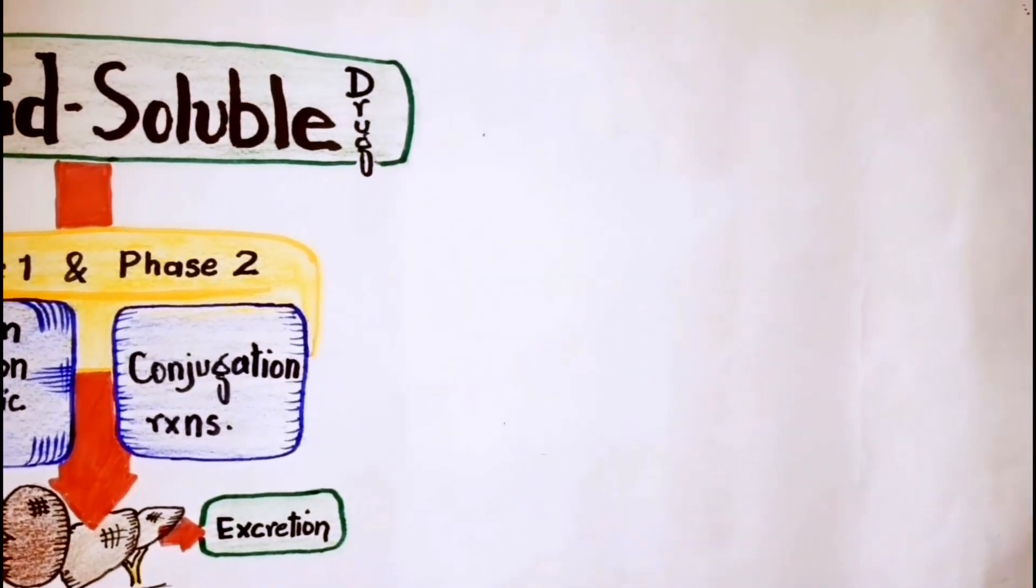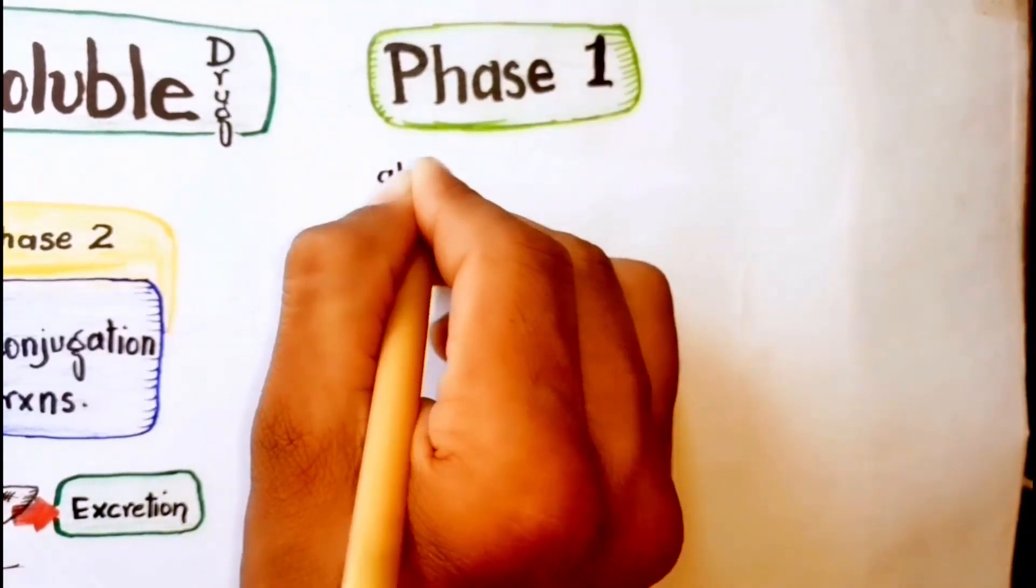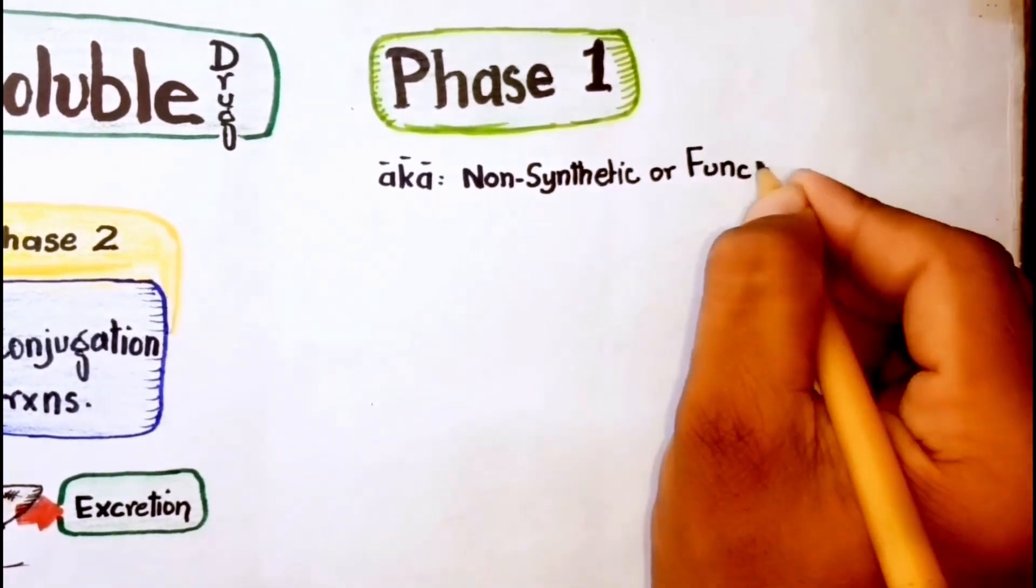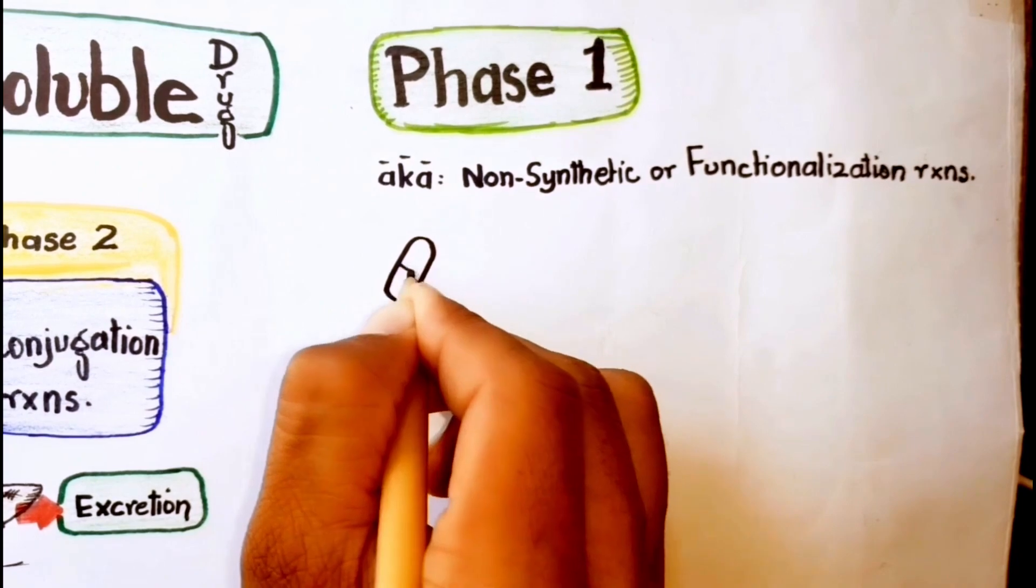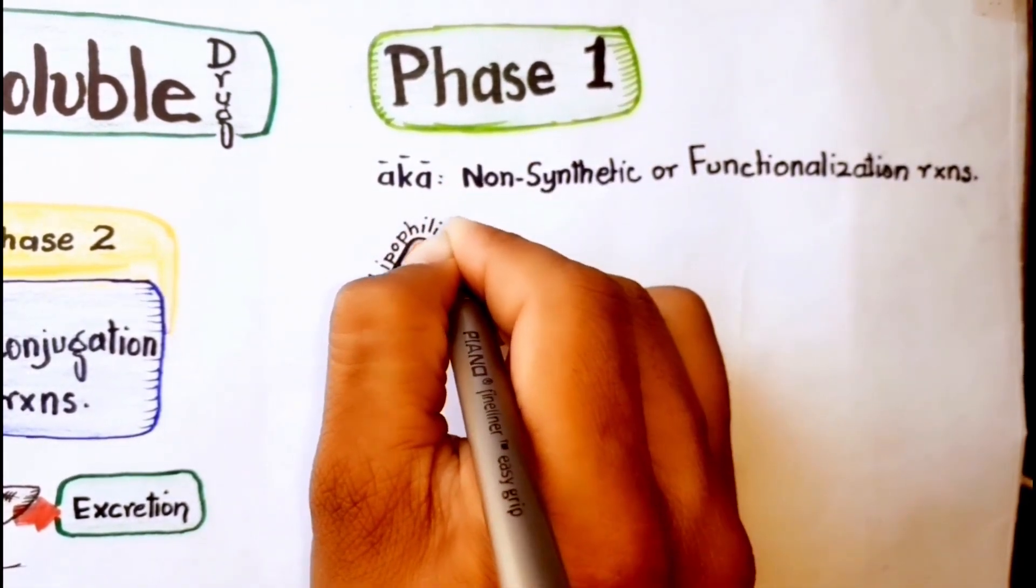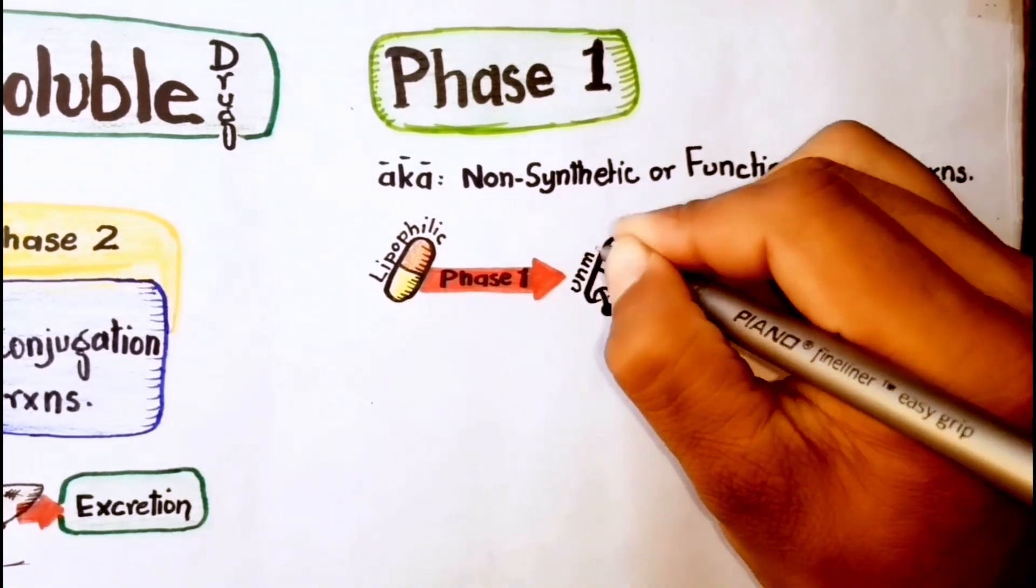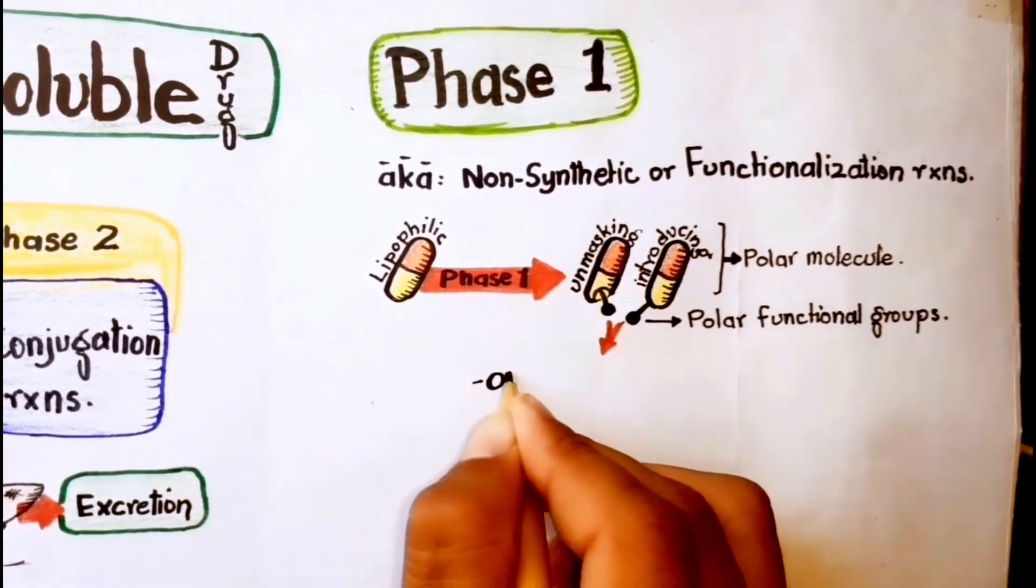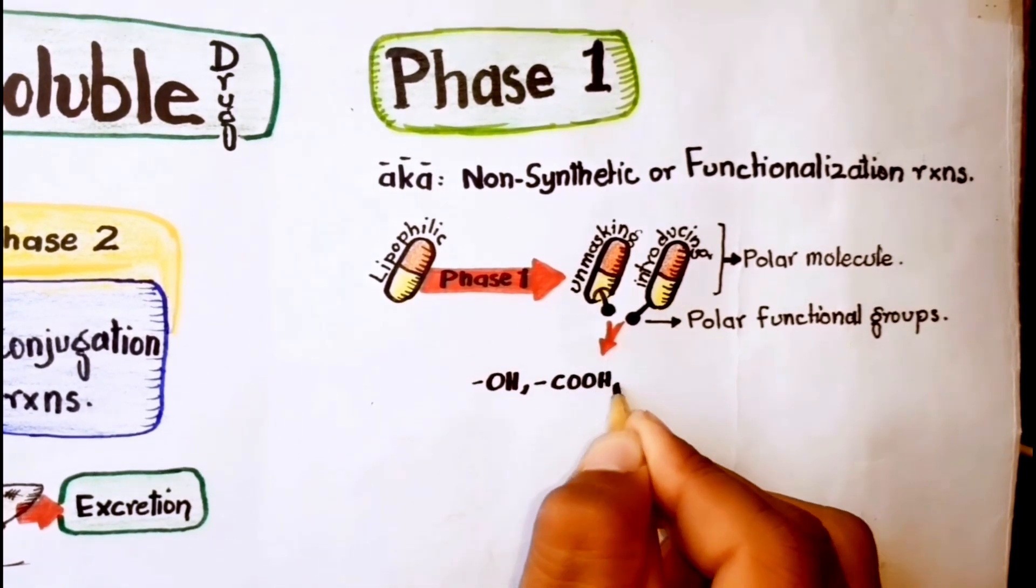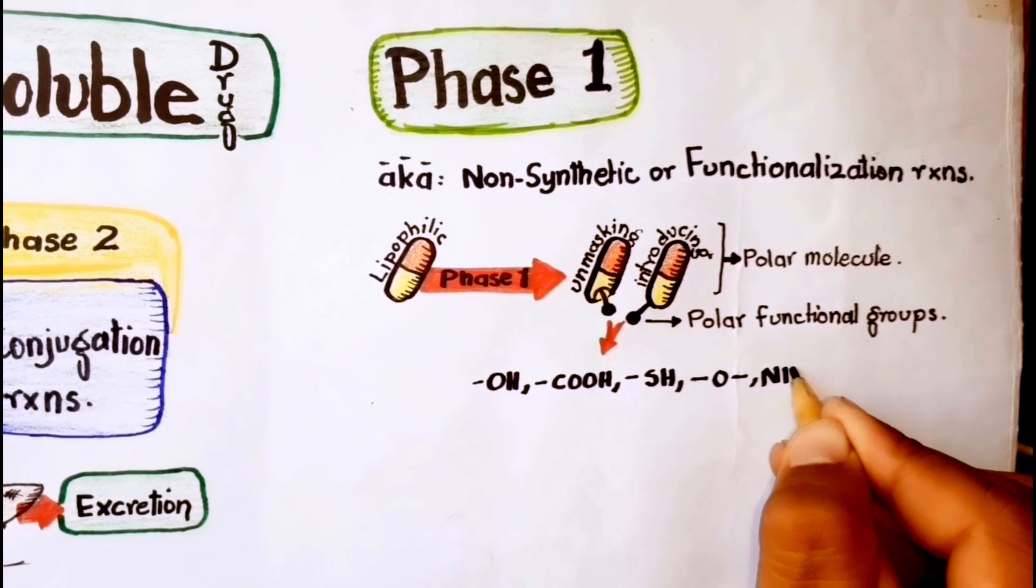Starting with phase 1 reactions, phase 1 reactions are also known as non-synthetic or functionalization reactions. These reactions convert lipophilic drugs into more polar molecules by unmasking or introducing a polar functional group, such as hydroxyl, carboxylic acid, thiol, oxygen, or NH2 groups.